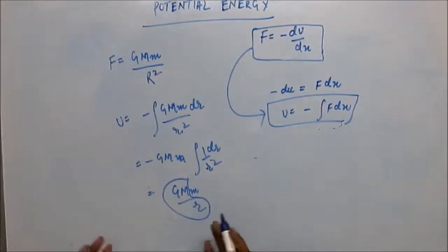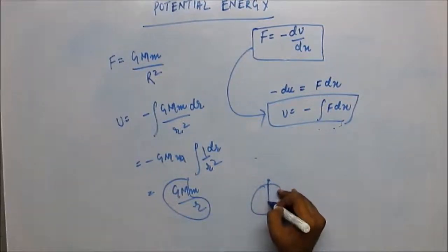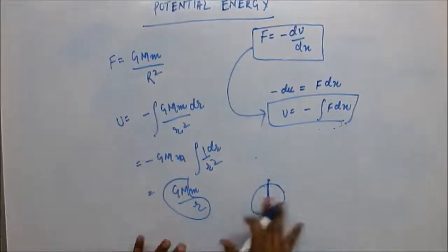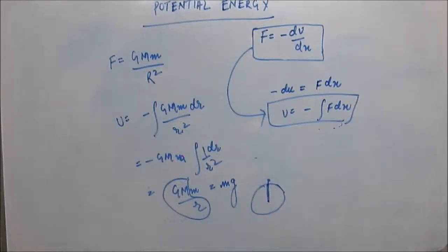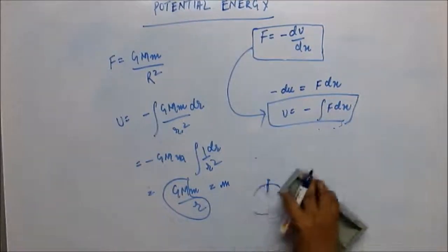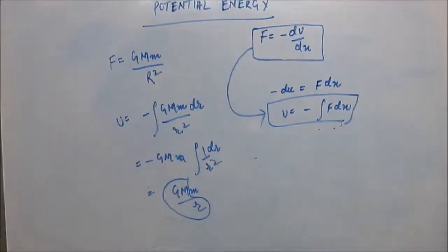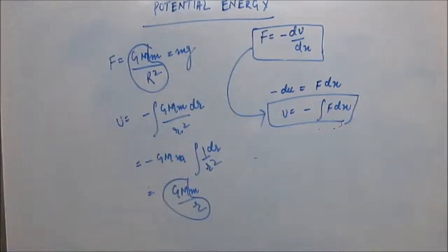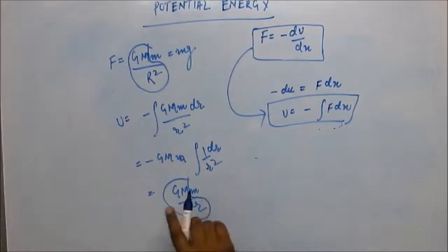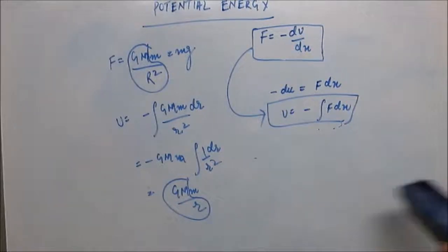When the body is close to the earth, r is approximately the radius of the earth, so GMm/r remains approximately constant. We generally write small g as GM/r², and force is written as mg. So the gravitational potential energy is GMm/r using the formula we have derived.